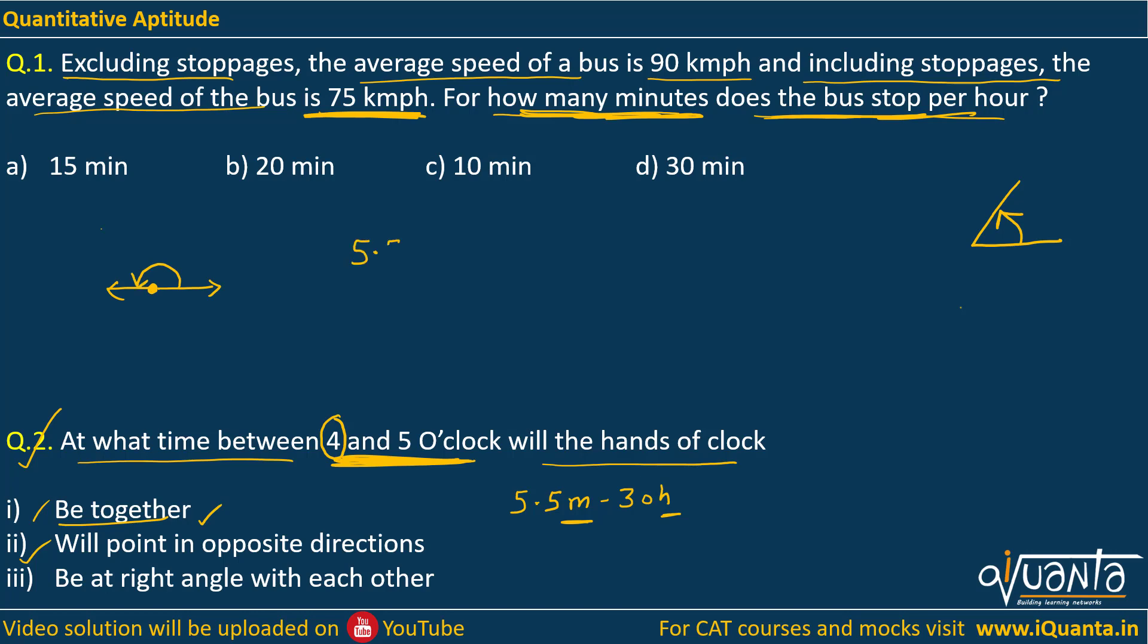So 5.5m, we have to calculate m, minus 30 into h will again be 4. That should be equal to 180 degrees. So when you solve this, you get m equal to 300 by 5.5,